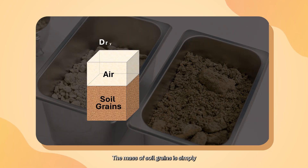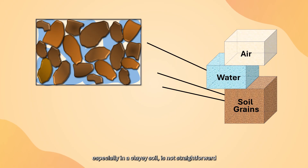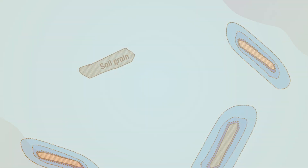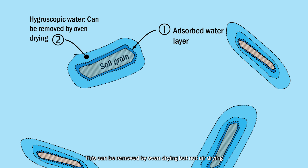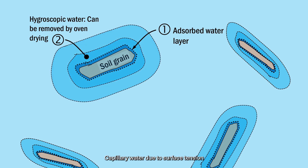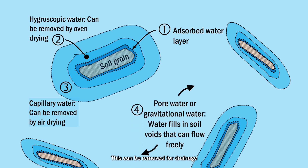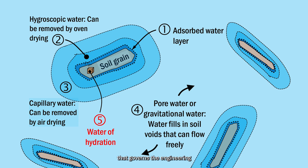The nature of water in a soil, especially in a clay soil, is not straightforward. There could be up to five different types of water surrounding a soil particle: absorbed water, which cannot be removed by oven drying even at 105°C; hygroscopic water, which can be removed by oven drying but not air drying; capillary water due to surface tension, which can be removed by air drying; pore water, which can be removed by drainage; and water of hydration, which is chemically bonded to the soil grains and does not govern the engineering behavior of the soil.